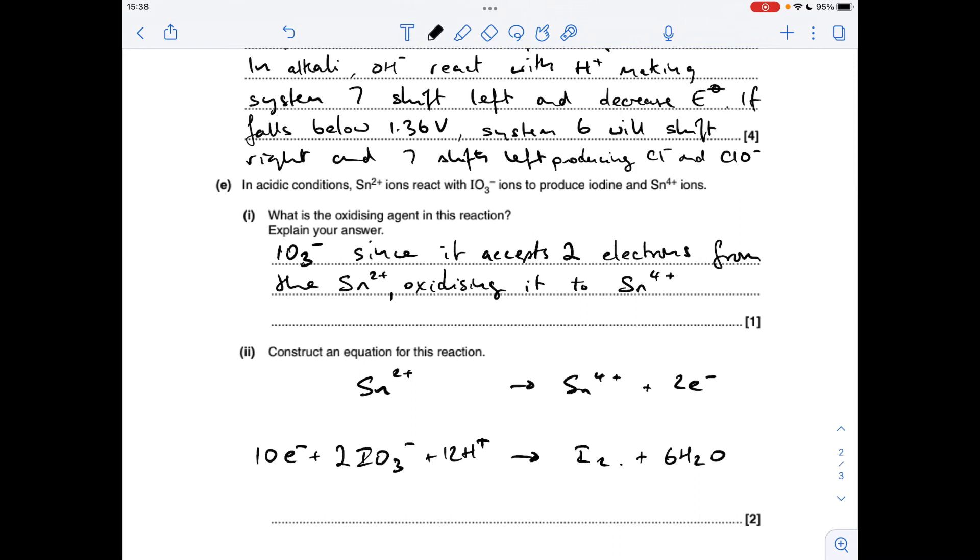And then to combine the two half equations we need the electrons to disappear. If I multiply this one by 5 that's going to give me 10 electrons in the tin half equation, so when I add these two together we'll have 10 electrons on each side and they will cancel.